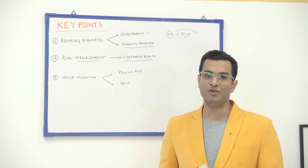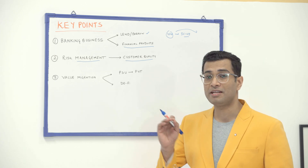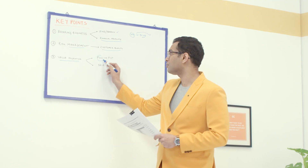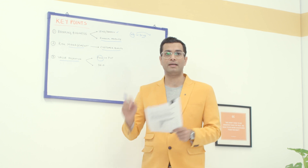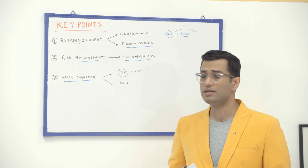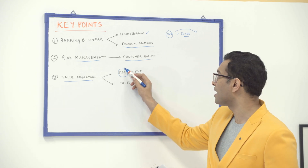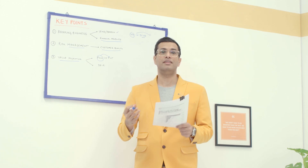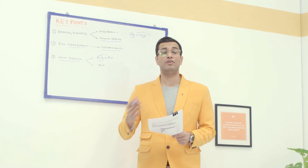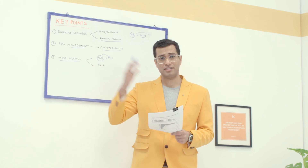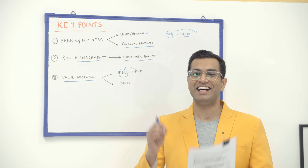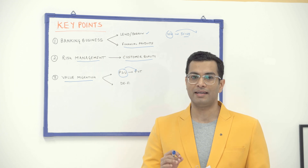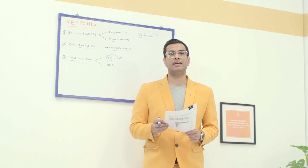The third key point is the principle of value migration. A lot of value migrated from public sector banks in the 90s and early 2000s to private banks like HDFC and ICICI. HDFC Bank went on to become one of India's largest banks in two decades, driven by excellent customer relationships and digital banking.